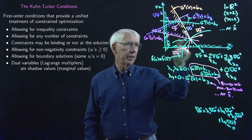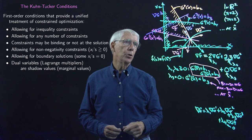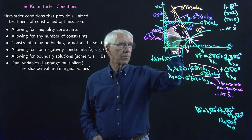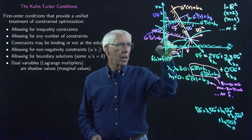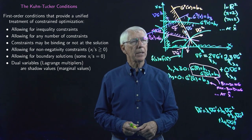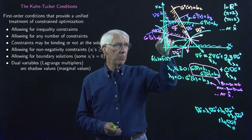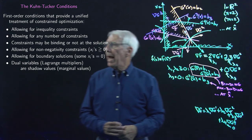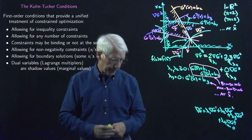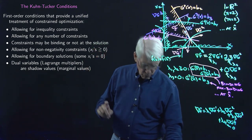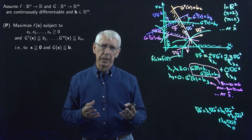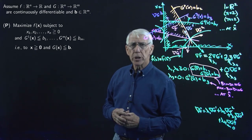On two or more of the constraints, we've said we're going to allow for boundary solutions. This is not a boundary solution — it's not on the boundary — but if I changed my objective function to something like this, then that would be a solution on the boundary. And finally, it says that dual variables are going to be shadow values; that hasn't shown up yet — that's going to come at the end of the lecture. So let's now move on to start looking at the problem more generally and to start developing the Kuhn-Tucker conditions and the Kuhn-Tucker theorems.